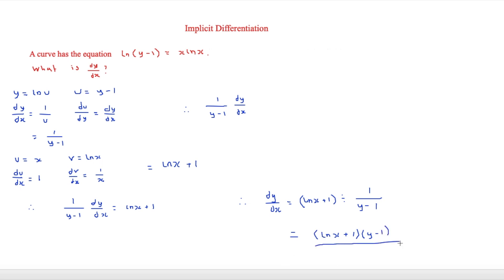This question uses many different types of differentiation: the chain rule at the start, the product rule for x ln x, logarithmic functions, and in previous examples we saw trigonometric functions. So implicit differentiation is the basis, but you will have to use other types of differentiation as well to get the final answer. Thank you for watching this video, see you soon.